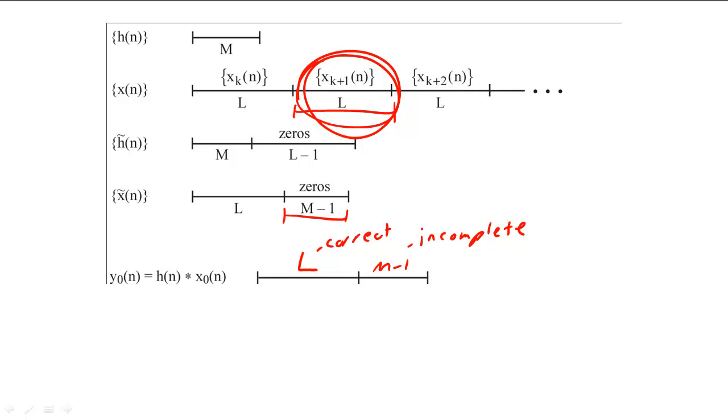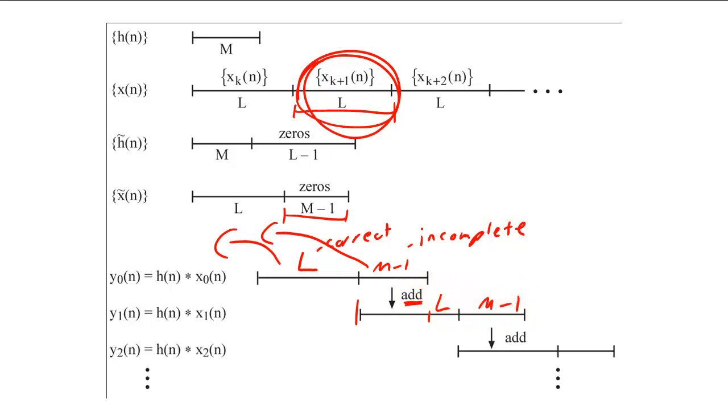While we can send the first L samples to the output of the system, we need to finish the convolution for the remaining samples. We can complete the first convolution by calculating the second convolution. By overlapping and adding the second convolution with the first, we can complete the convolution for the first input sequence and begin the convolution for the second input sequence. By repeating this method of overlapping and adding smaller convolutions, we can compute the full convolution sum for the entire input sequence, one chunk at a time.